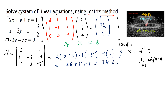Since det(A) ≠ 0, A⁻¹ exists and the system has a unique solution. We can confirm the given system has a unique solution. Now let us find the adjoint of matrix A.